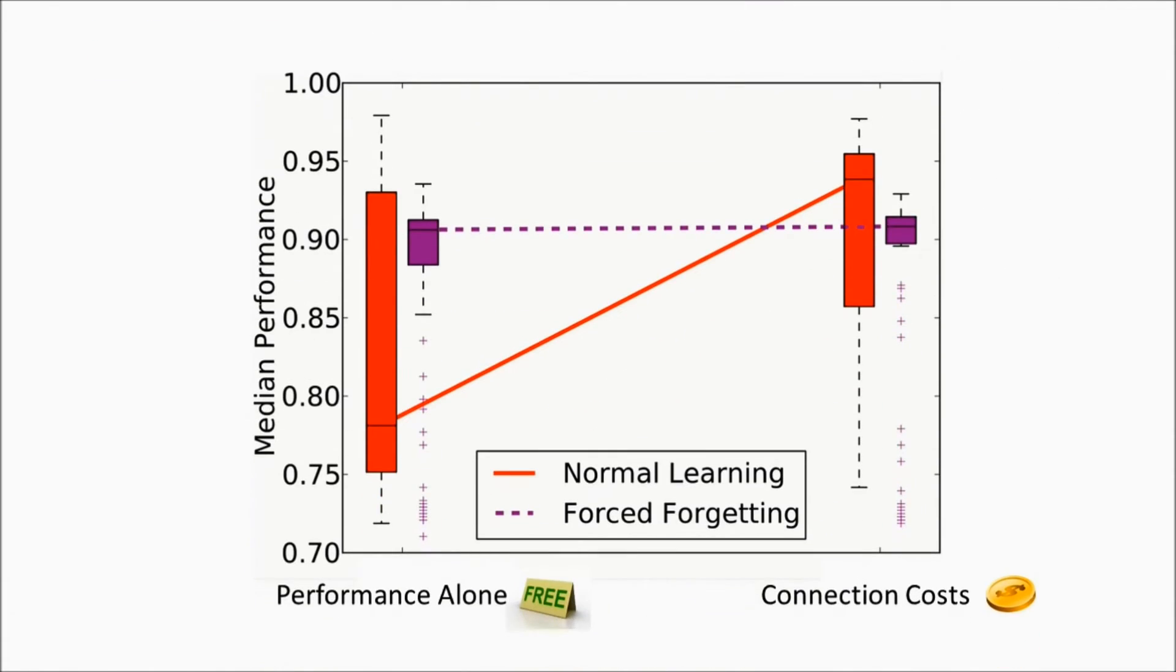In another experiment, we wanted to investigate how important the resistance to forgetting is in explaining the increased performance of connection cost networks. To study this, we evolved networks in a situation where they were not allowed to remember old skills as new skills are learned. As previously shown, in the normal situation, the connection cost leads to higher performance.